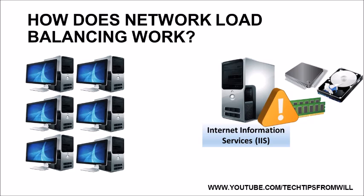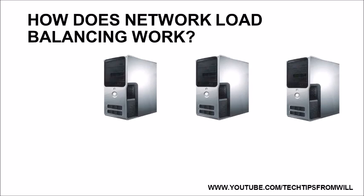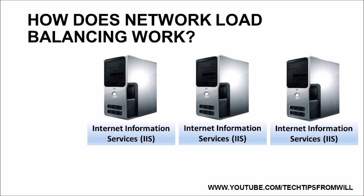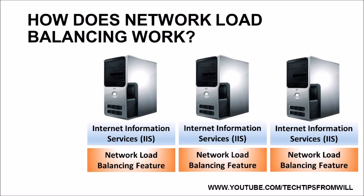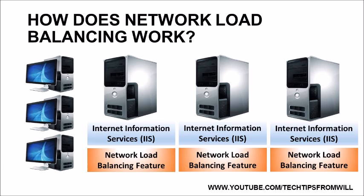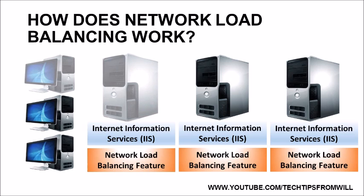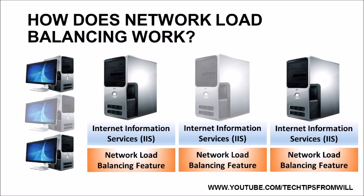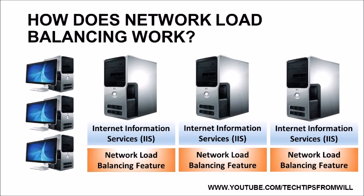With network load balancing, you can fix this problem by creating an NLB cluster. Let's imagine that you purchase two more servers, which you also install Internet Information Services on. Next, you install the network load balancing feature onto all three servers, which is required to create an NLB cluster. In a later lesson, I will demonstrate how to install this feature. From this point on, the three servers will work together to provide the service, and client requests are distributed amongst the servers in the cluster — the first client will be directed to the first server, the second client to the second server, and the third client to the third server. This process is completely hidden from the client; as far as the client is aware, they are connecting to a single server.